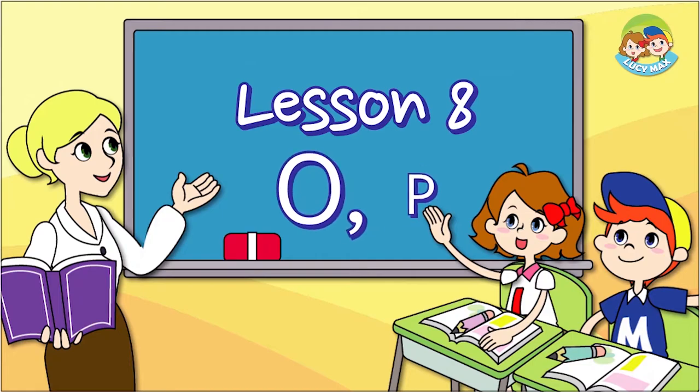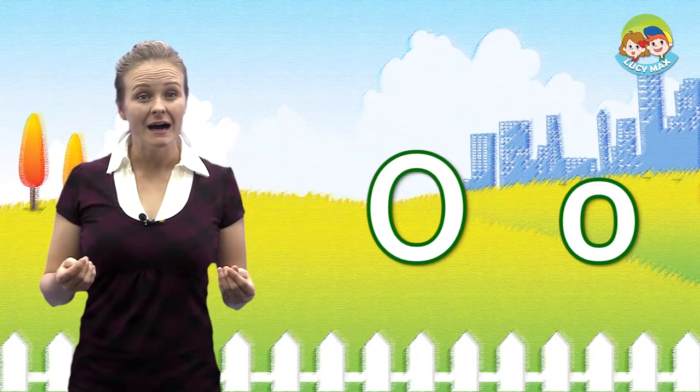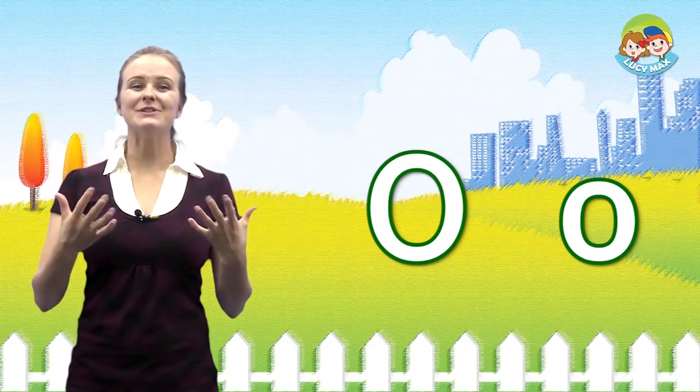Welcome back to Four Step Phonics! Today we'll do the beginning sounds of O and P. First, let's study the letter O. This is the letter O. It makes the 'aw' sound. Can you say 'aw'? Very good. Let's do it together: aw, aw, aw.